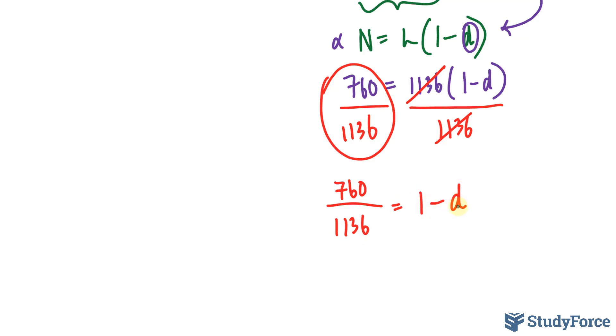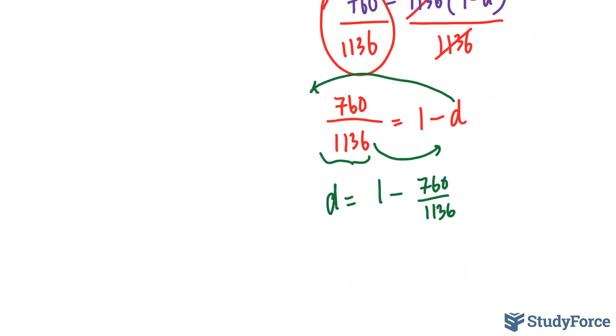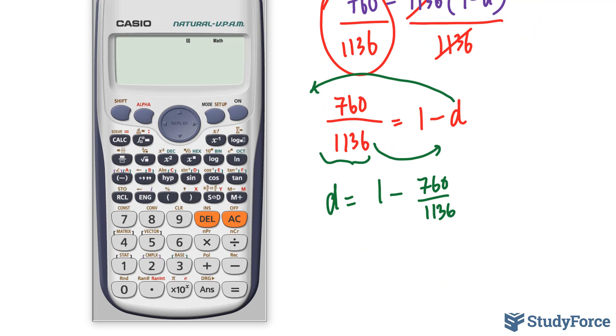All you have to do is solve for d. So, we move that d over, and we move that over, giving us the equation d is equal to 1 take away 760 over 1136. Hopefully, you have a scientific calculator. So, we do 1 take away, and in parentheses, 760 divided by 1136.